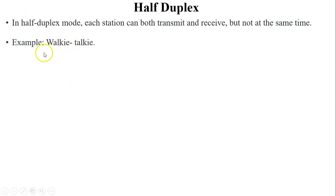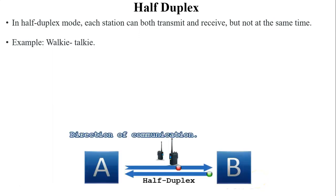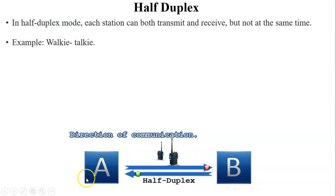One is the sender and one is the receiver at the same time. Another example of half duplex mode is a walkie-talkie. User one sends a message to user two; at that time user two can only receive the message but cannot send a message back. In the figure, when user A sends data to user B, user B is the receiver only; when user B sends data to user A, user A receives and cannot send.